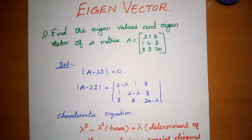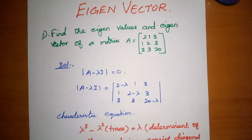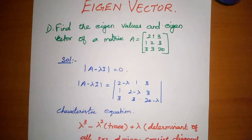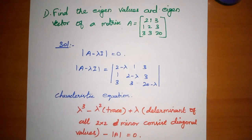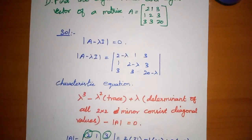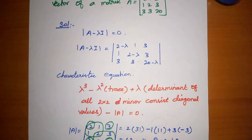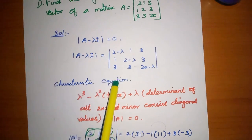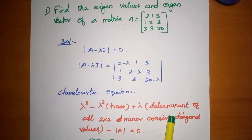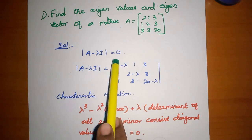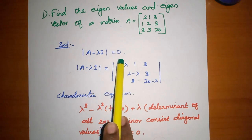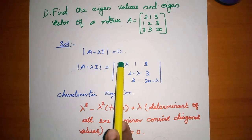Let's move on to the topic: find the eigenvalues and eigenvectors of a 3x3 matrix A. One video has already been made on this. The characteristic equation is A minus lambda I equal to zero.